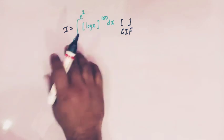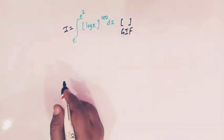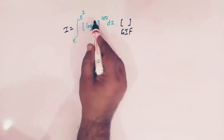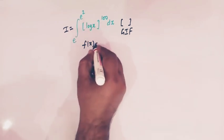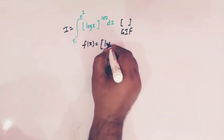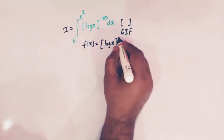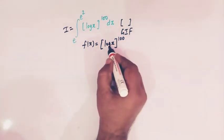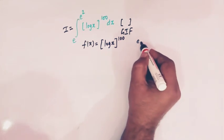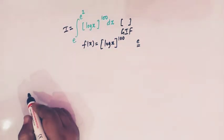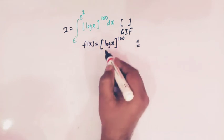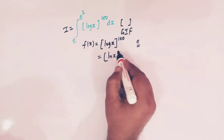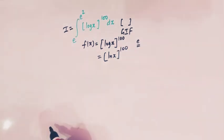Before proceeding further, let us take a look at this function. Say f of x is equal to the greatest integer of log x, raised to 100. Here the base of the logarithm is e, which is the exponential number. So we can also write this function f of x as ln x, raised to 100.